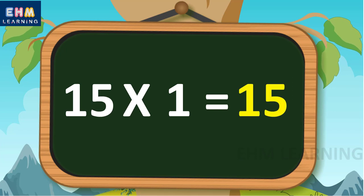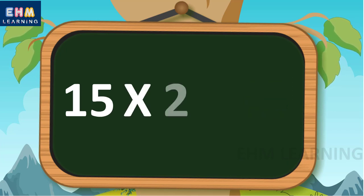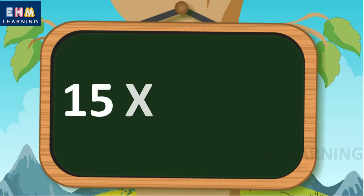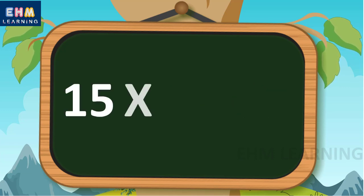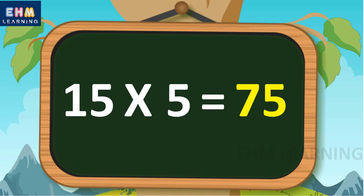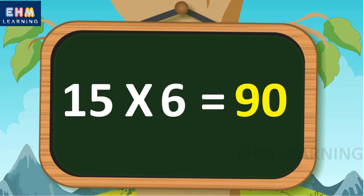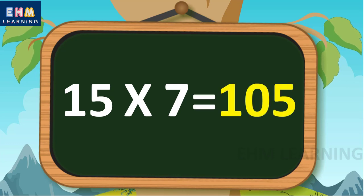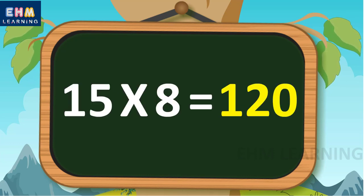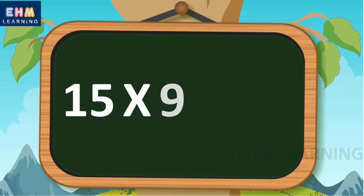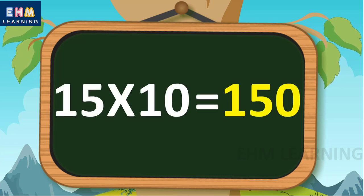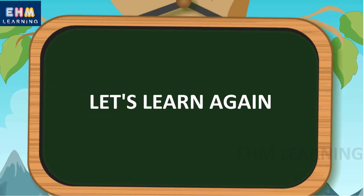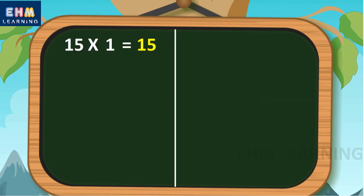Table of fifteen. Fifteen ones are fifteen, fifteen twos are thirty, fifteen threes are forty-five, fifteen fours are sixty, fifteen fives are seventy-five, fifteen sixes are ninety, fifteen sevens are one hundred and five, fifteen eights are one hundred and twenty, fifteen nines are one hundred and thirty-five, fifteen tens are one hundred and fifty.